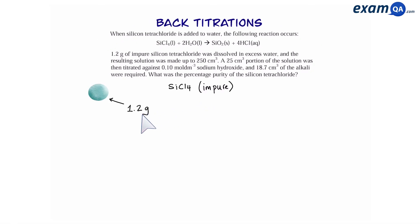So we have a 1.2 gram sample of silicon tetrachloride, however it's impure. We want to know what is the actual mass of silicon tetrachloride so that we can work out the percentage purity. Now, to work out mass we need to know moles and MR. We can already work out the MR of silicon tetrachloride using the periodic table. It's 170.1. However, we don't know the moles.